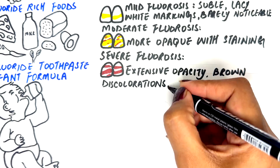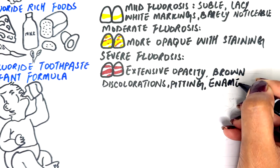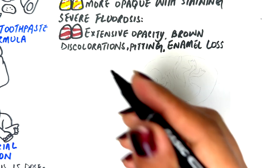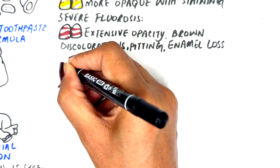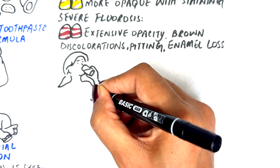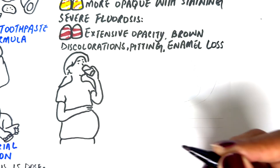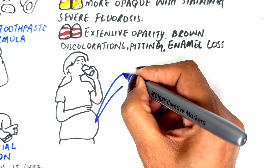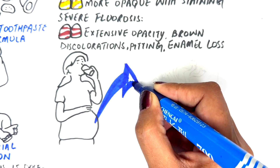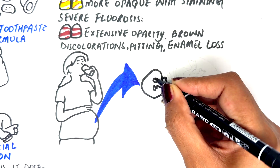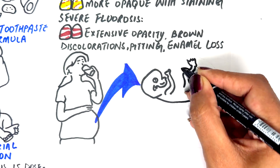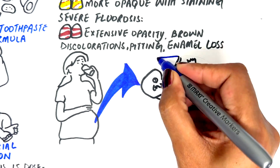Severe cases show extensive opacity, brown discoloration, pitting, and enamel loss. While less common and less studied in primary teeth, dental fluorosis in primary teeth can occur, typically due to high maternal fluoride intake during pregnancy, as fluoride can cross the placenta and affect developing primary teeth.